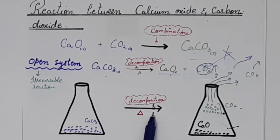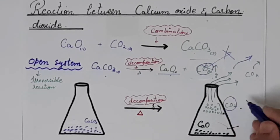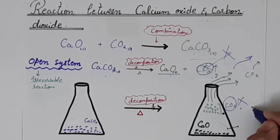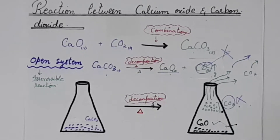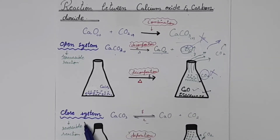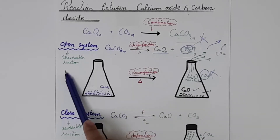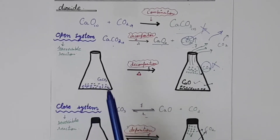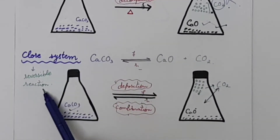Since the carbon dioxide has escaped, the single remaining product — calcium oxide — will never recombine to go back to calcium carbonate. In this open system condition, only the forward reaction occurs. This is why the open system gives an irreversible reaction.